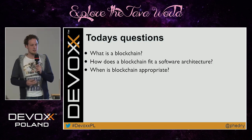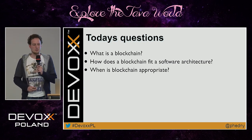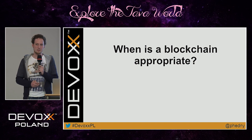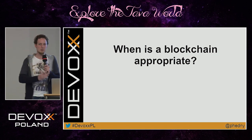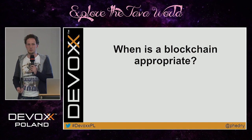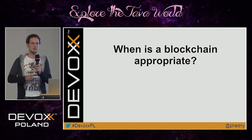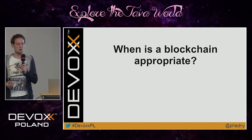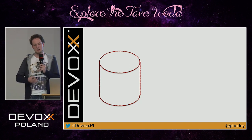Now we've seen what a blockchain is and where it fits in an architecture. The final question: when is a blockchain appropriate? The simple answer is: in most cases it is not. There is a lot of hype about this technology as a silver bullet, but it is not always — and in most cases not even — the best solution. There are five questions you need to answer with yes. If all five are yes, blockchain may be appropriate; if any is no, find a different solution. First: do you need a data store?